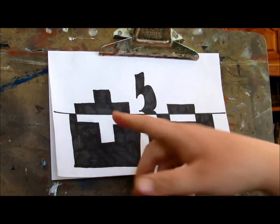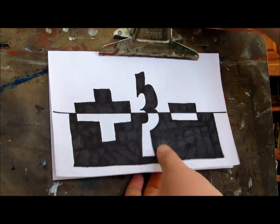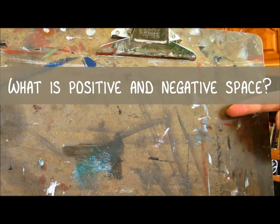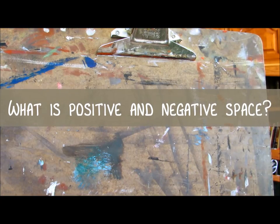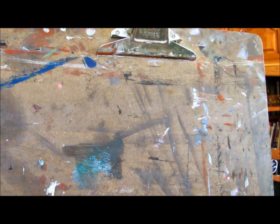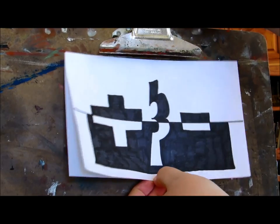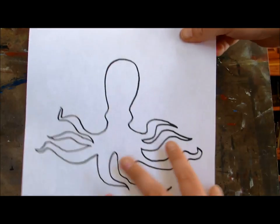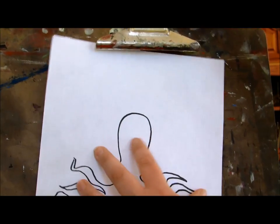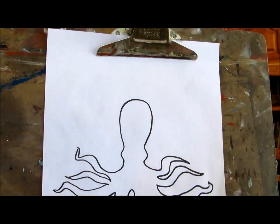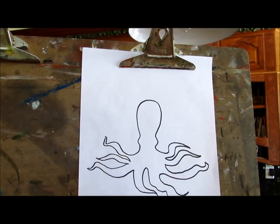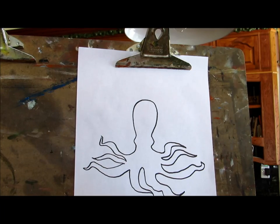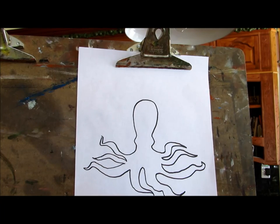In a previous video we learned all about positive and negative space — click on the link if you want to watch that video. In this tutorial we're going to learn how to make an image really fun using that positive and negative space. You want to start by drawing the silhouette of an image. I've got an octopus right here — as you can see, a silhouette is just the outline of an image.